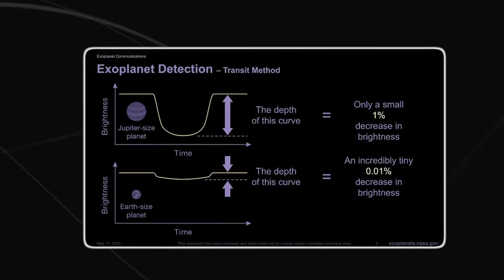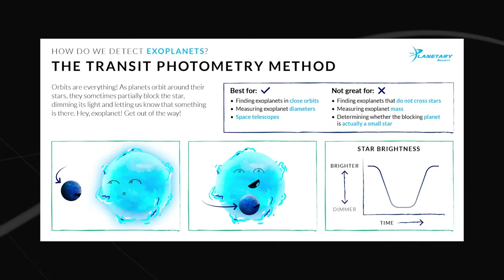This method involves measuring the small dip in the brightness of a star when an exoplanet passes in front of it. However, the transit method can only be used for a small fraction of exoplanets, and it can be difficult to separate the signal of an exoplanet from other phenomena that can cause the same dip in brightness.